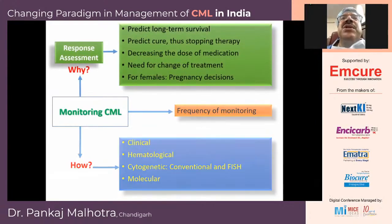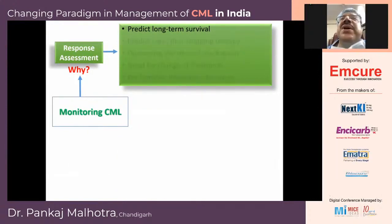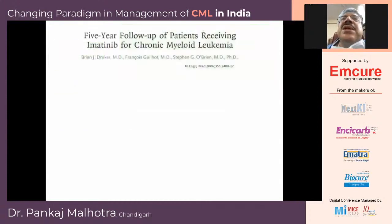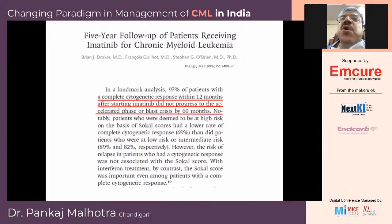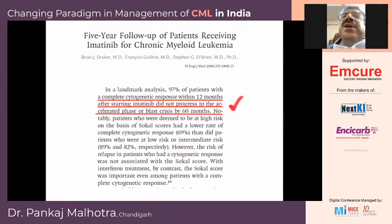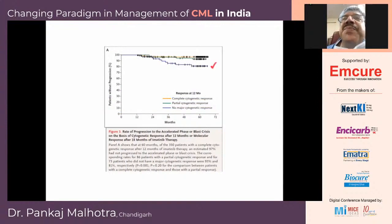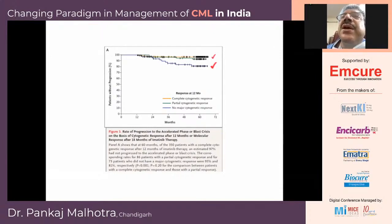For response assessment, the first goal is predicting long-term survival. A landmark paper by Brian Druker on five-year follow-up of patients receiving Imatinib for CML showed that patients who achieved complete cytogenetic response within 12 months did not progress to accelerated phase or blast crisis by 60 months. This means that at 12 months, you could predict that a patient will do well over the next five years. Patients who did not achieve hematological response did not do well, whereas those who achieved cytogenetic response did well.